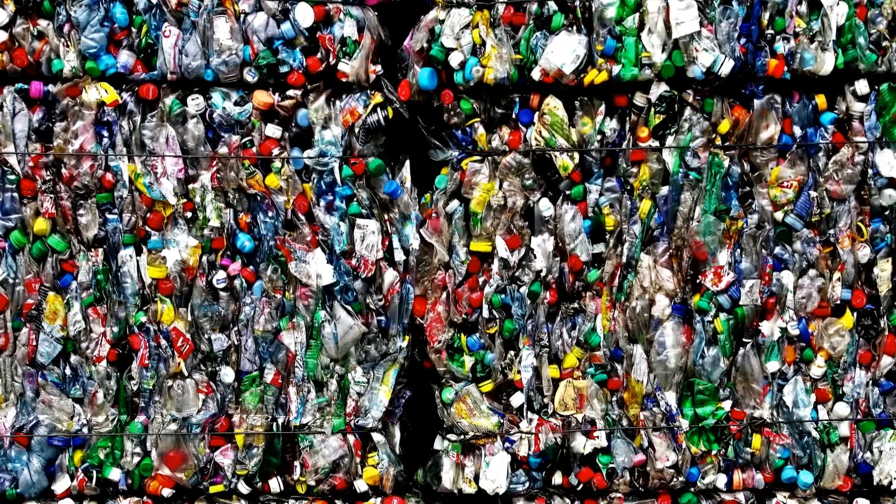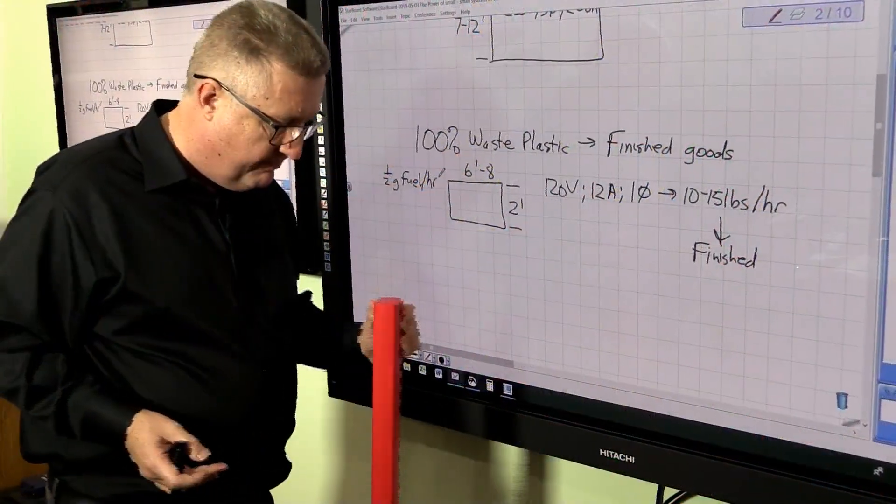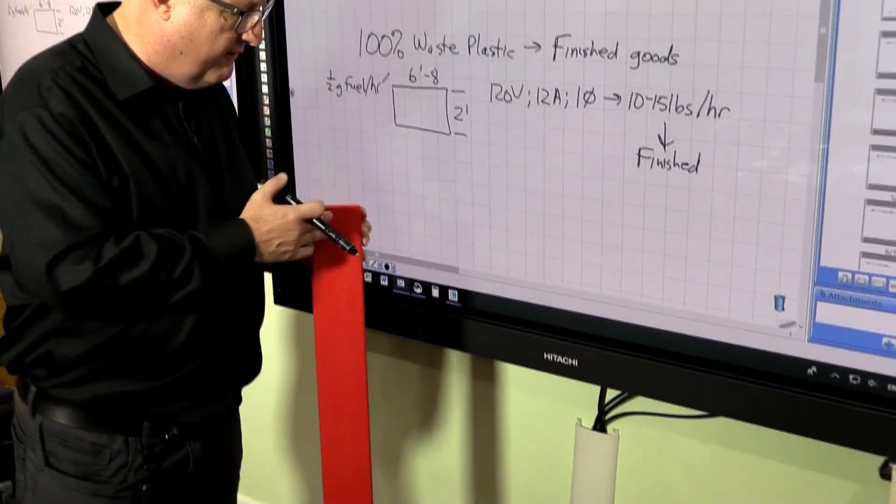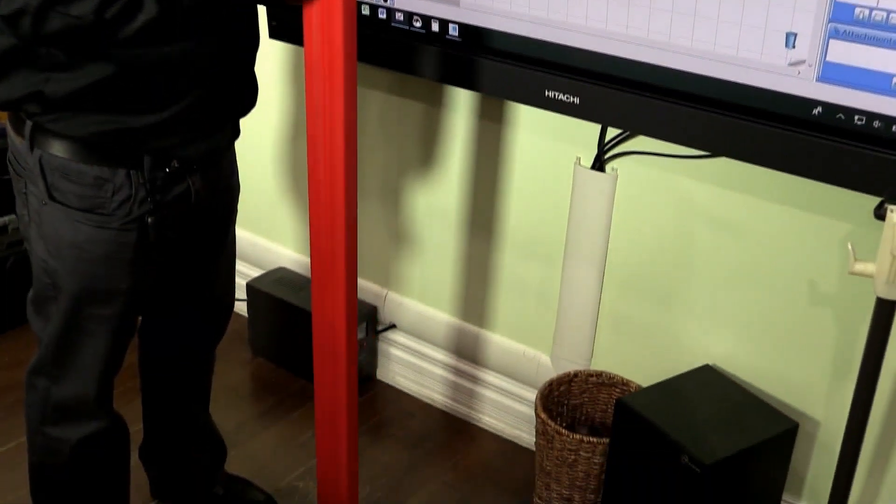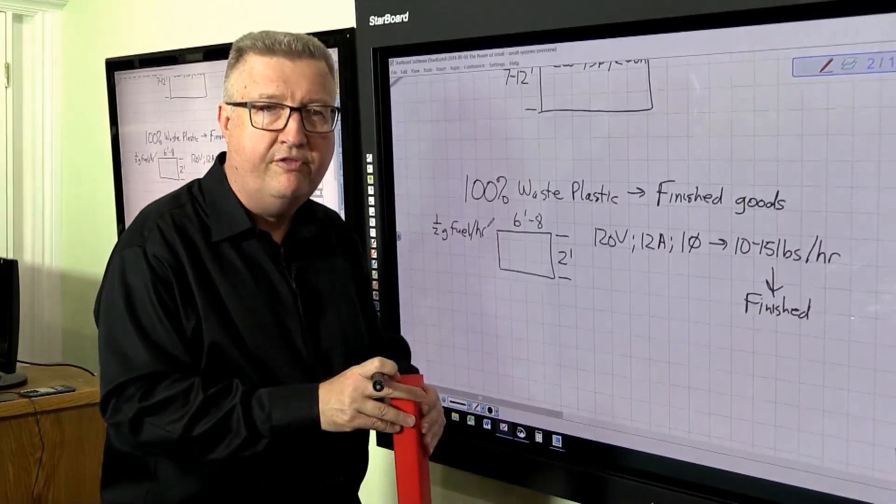But you could say, okay, well, what if they don't need roofing or siding material? Well, we can, for instance, make plastic lumber. Very durable lumber. We can make it solid. We can make it recessed to use less material per foot.